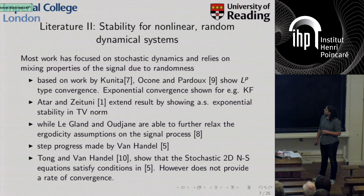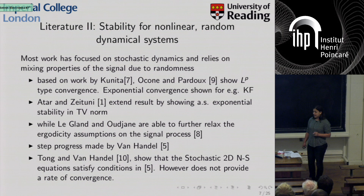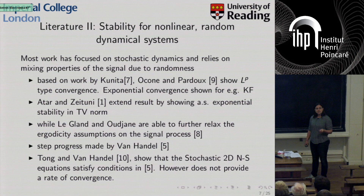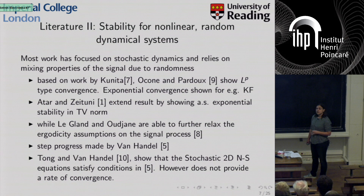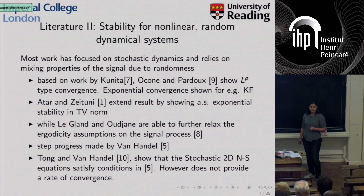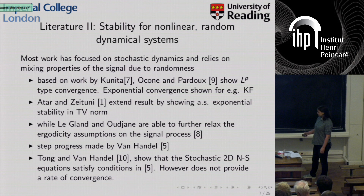LeGlon and Hujan further relaxed the ergodicity assumptions. A gap was later identified in the main proof of Kunita — a problem since many stability results relied on it — but fortunately the gap was closed by Van Handel in 2009 under slightly stronger conditions: strong ergodicity on the signal and non-degeneracy of observations. They showed the stochastic 2D Navier-Stokes equations satisfy those conditions, but unfortunately this approach does not provide a rate of convergence.